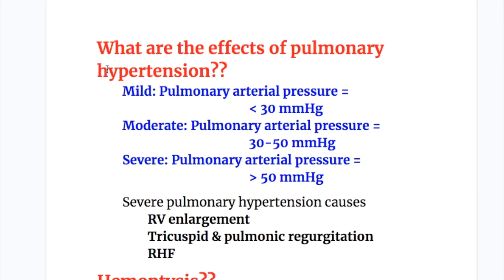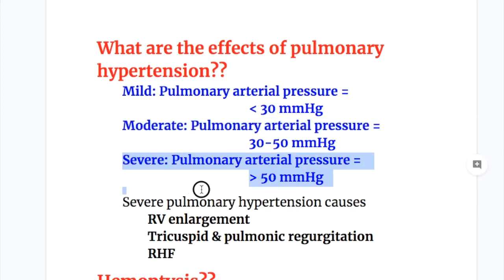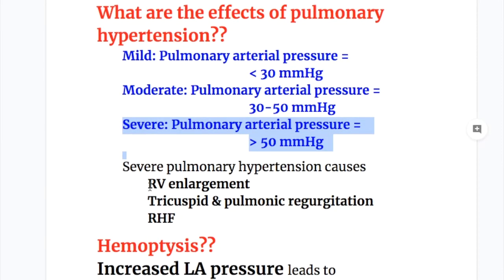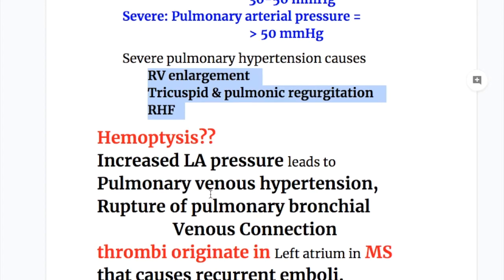What are the effects of pulmonary hypertension? In mild cases, pulmonary pressure is less than 30 mmHg. In moderate cases, it is 30 to 50 mmHg. In severe cases, it is more than 50 mmHg. Severe pulmonary hypertension causes right ventricular enlargement, tricuspid and pulmonic regurgitation, and right heart failure.